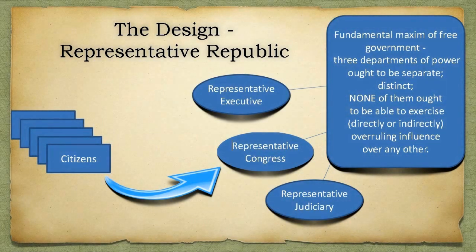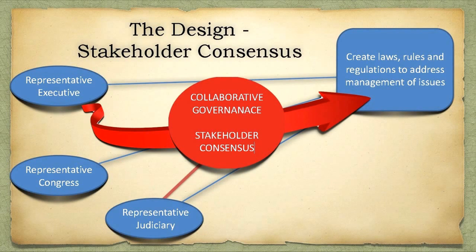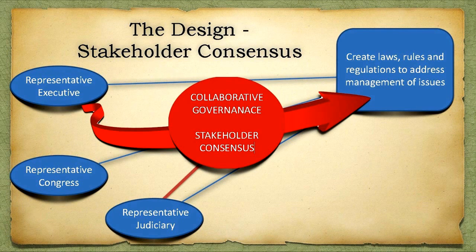Our original design of a representative republic shows everything is empowered to us as citizens. They have totally removed that aspect of it and substituted it, again through the judiciary part of it. When we set this up originally, I had Dennis actually add a second red line from the collaborative government stakeholder consensus back to the representative judiciary. Now a lot of our judges are elected, some are appointed, but it's imperative that we start getting involved with the judges, because the judges are what has occurred in every level of how this is enforced.